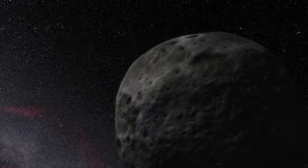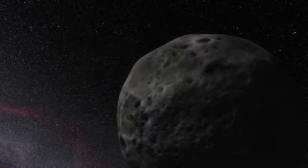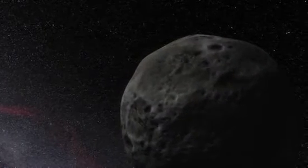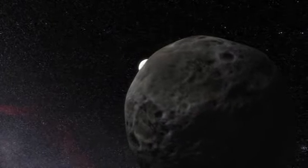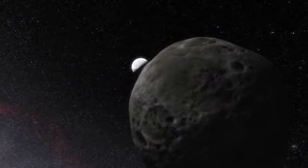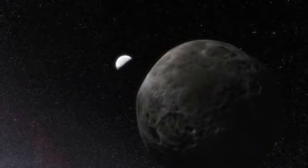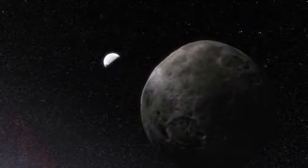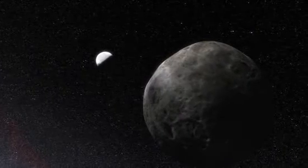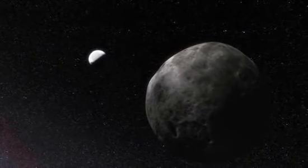Because Eris also has a moon, called Dysnomia, astronomers have also been able to calculate the mass of Eris by a careful study of this moon's orbit. Using the new diameter and known mass, they then calculated the density of Eris, which now appears to be greater than astronomers had previously thought.